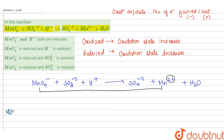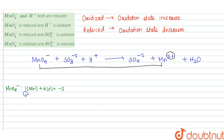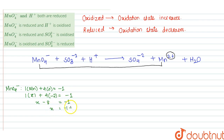Now, in MnO4⁻ there is one atom of Mn and four atoms of Oxygen, and the total charge is −1. Let us consider the oxidation state of Mn as X. So, 1×X + 4×(−2) = −1, which gives X − 8 = −1. Therefore X = −1 + 8 = +7. So in MnO4⁻, the oxidation state of Mn is +7.